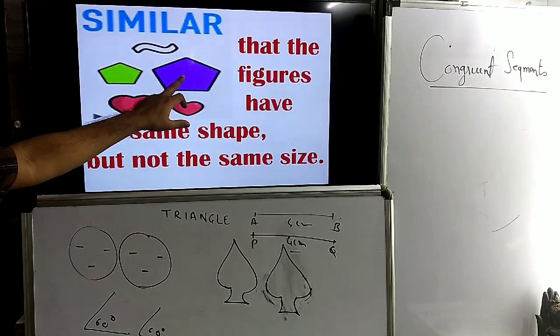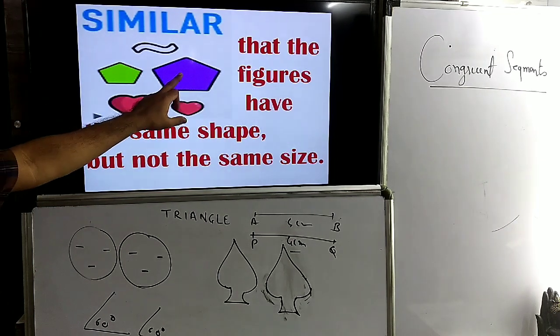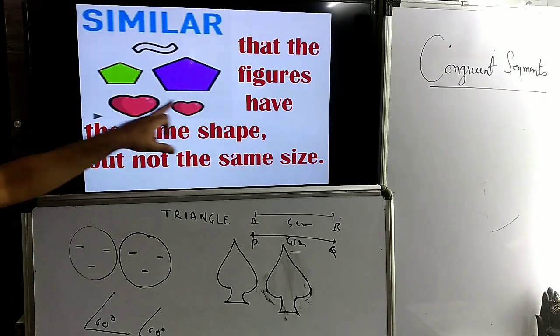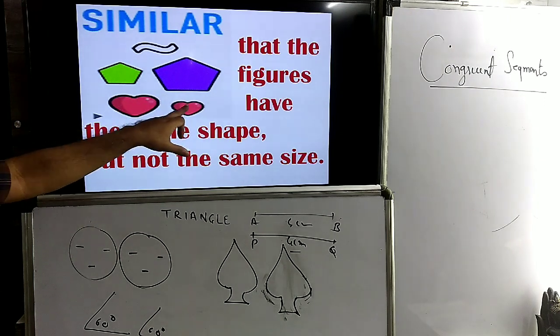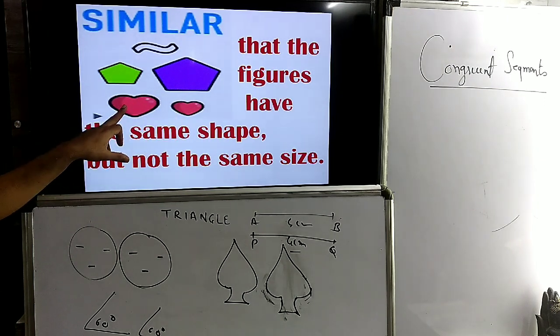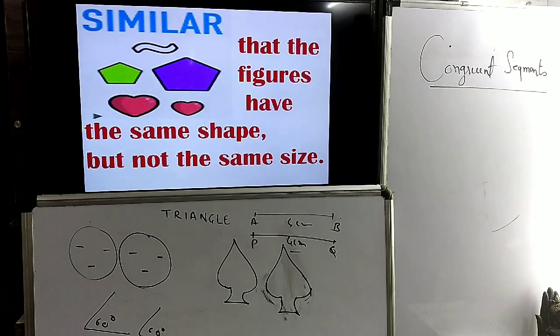These two pentagons — this is the smaller pentagon and this is the larger pentagon — are two shapes of different sizes, but the shapes are the same. These are said to be similar.